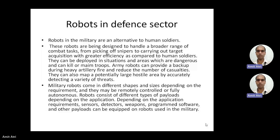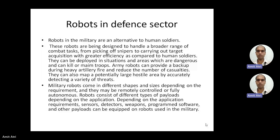Military robots come in different shapes and sizes depending on the requirement, and they can be remotely controlled or fully autonomous. The robot consists of different types of payloads depending on the application and requirements — sensors, detectors, weapons, program software, and other payloads can be equipped on robots used in the military.